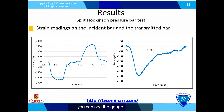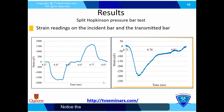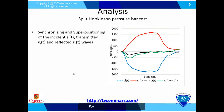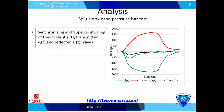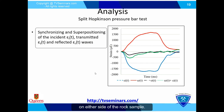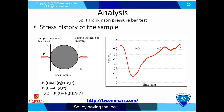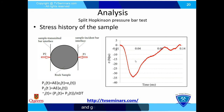Here you can see the gauge readings from the incident bar on the left graph and the readings from the transmitted bar on the right graph. Note that the gauge mounted on the incident bar provides readings of the compressional incident wave and the reflected tensile wave. For each experiment, we synchronized the incident, reflected, and transmitted waves in order to achieve the loading condition on either side of the rock sample. By having loading conditions P1 and P2 on either side of the sample, we could calculate the stress history and obtain the maximum strength under the applied loading rate.